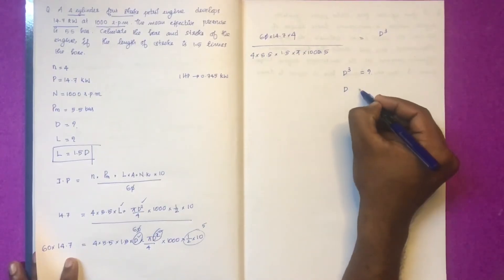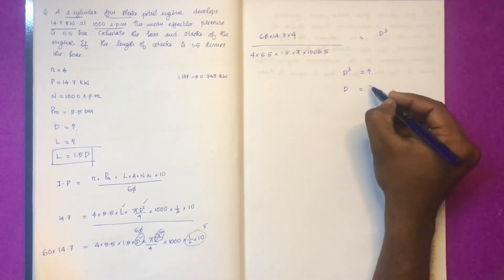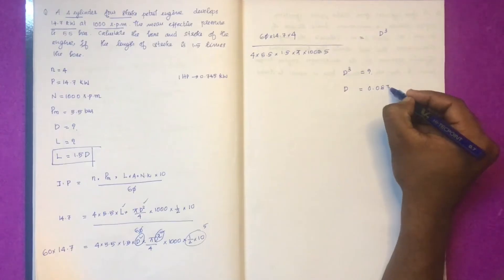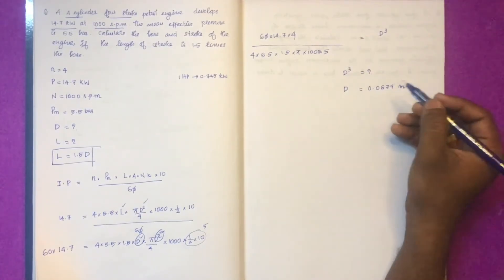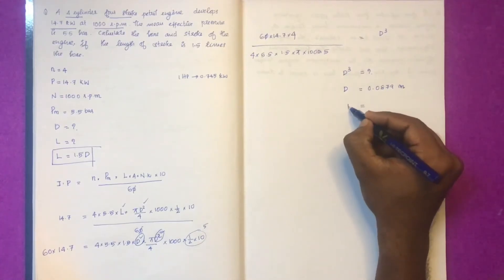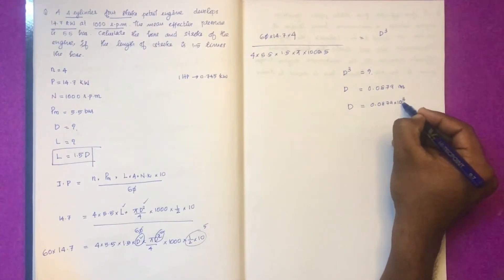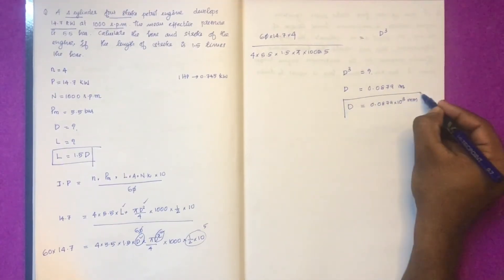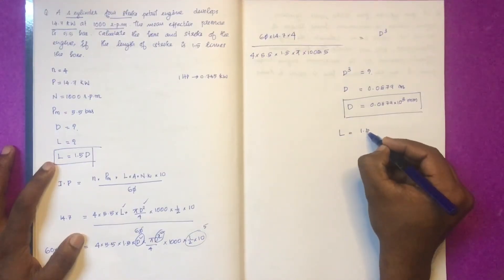Solving the equation, we get D³, and the value of D is equal to 0.0879 meters, which is 103 millimeters diameter.